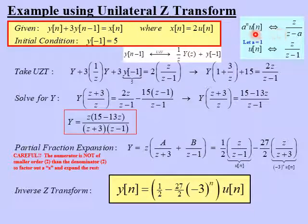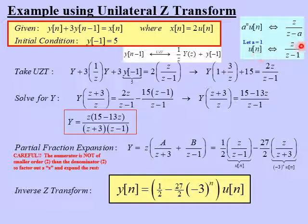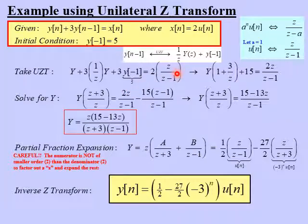Remember the Z-transform pair: a to the n times u of n transforms to Z over Z minus a. If we let a equal 1, this becomes the step function, whose transform is Z over Z minus 1. So x of n, which is 2 times the step function, transforms to 2 times Z over Z minus 1. The next several steps involve algebra to solve for Y so we can take the inverse Z-transform and find the sequence y of n.